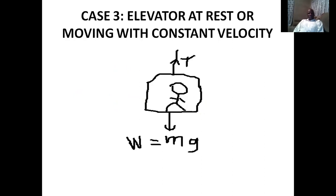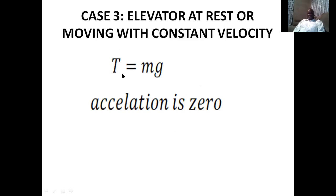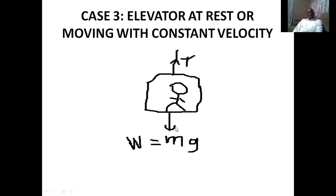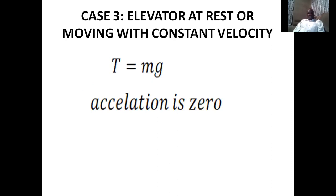The third scenario is the situation where the elevator is at rest or moving with a constant velocity. If the elevator is not moving, the acceleration is zero. If it is moving with a constant velocity, the acceleration is also zero. This means the tension — the upward force — equals the downward force, mg. So when acceleration equals zero, T equals mg, and the upward force equals the downward force.